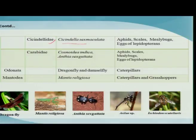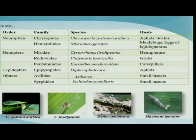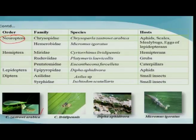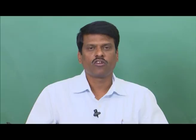Tiger beetles like Cicindela sexmaculata and carabids like Anthia sexguttata are general predators. Dragonflies feed on small flies including mosquitoes. Robber flies and hover flies are also predatory. Under the order Neuroptera, the green lacewing is quite efficient in controlling soft-bodied insects and eggs of certain pests, with mass production techniques standardized. Under Hemiptera, Cyrtorhinus lividipennis is quite effective against hemipteran bugs, especially the brown planthopper. Under Lepidoptera, Dipha effusa is a predator. The brown lacewing Micromus igorotus is also a quite effective predator. These are important predator groups normally employed in the biocontrol program.